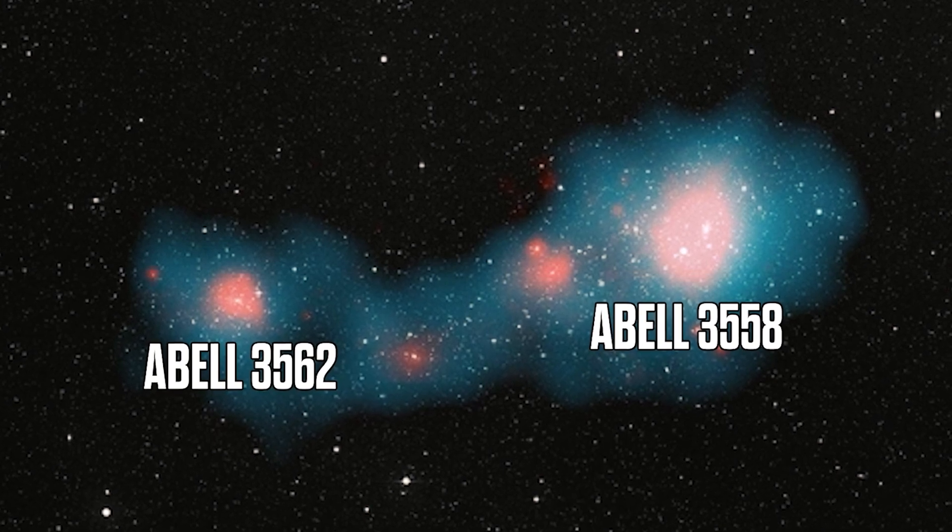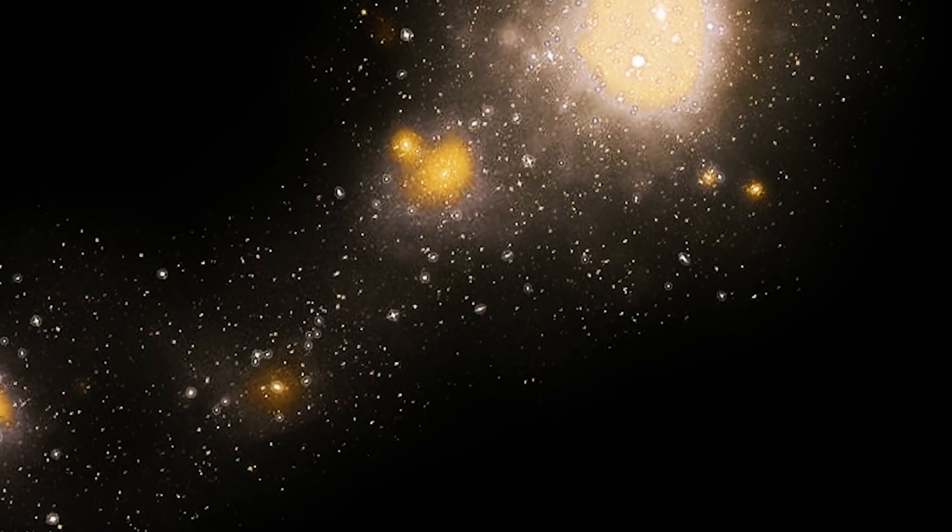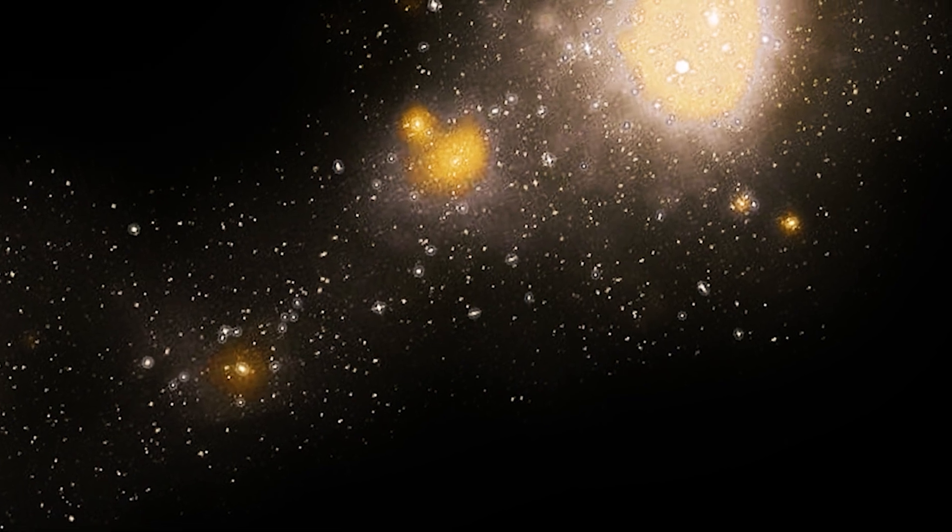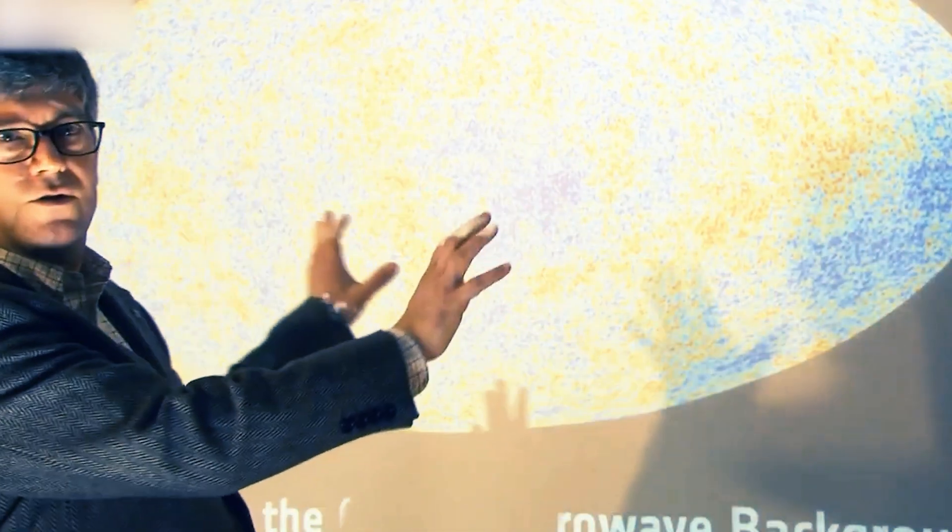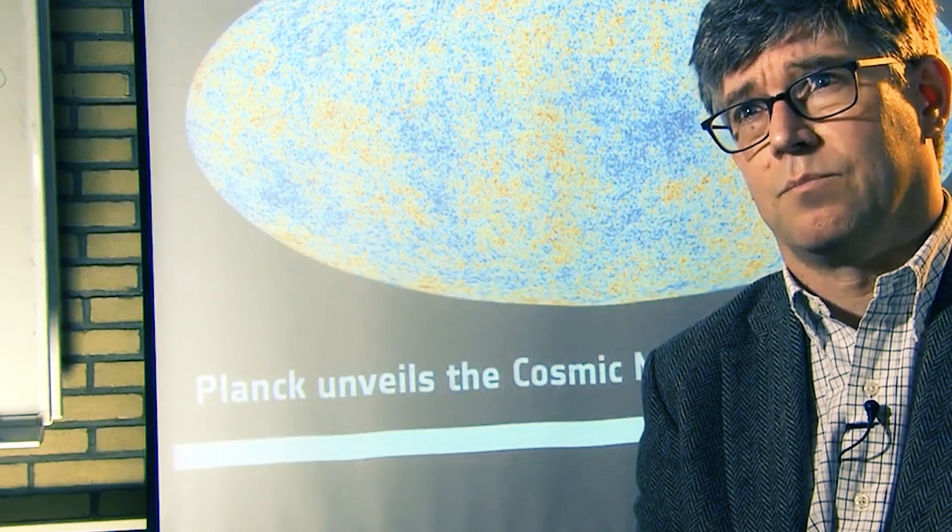The largest pink dots display two galaxy clusters, Abel 3558 on the right and Abel 3562 on the left, along with several smaller groups between them.